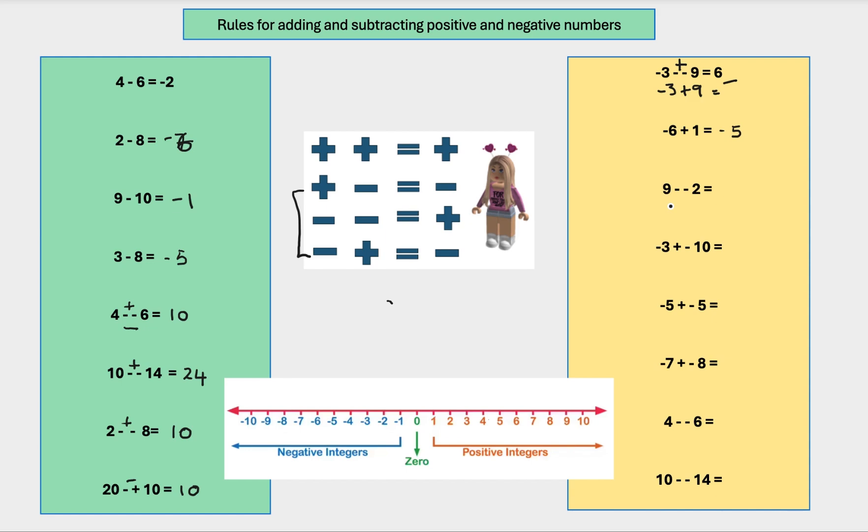Now we've got 9 minus minus 2. Well, we know what a negative and a negative is. It becomes a plus. So 9 plus 2 equals 11.